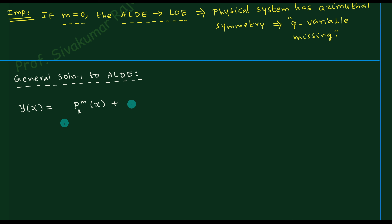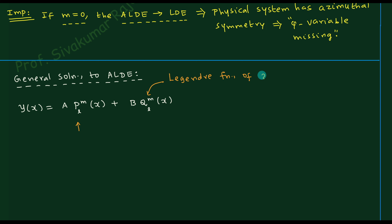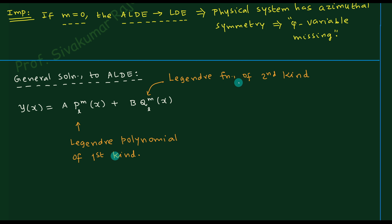The first linearly independent solution is denoted P_l^m(x), called the Legendre polynomial of the first kind. The second linearly independent solution is denoted Q_l^m(x), called the Legendre function of the second kind. The general solution is a linear combination: y = A·P_l^m(x) + B·Q_l^m(x). Note the distinction: P_l^m is called a polynomial, while Q_l^m is called a function.